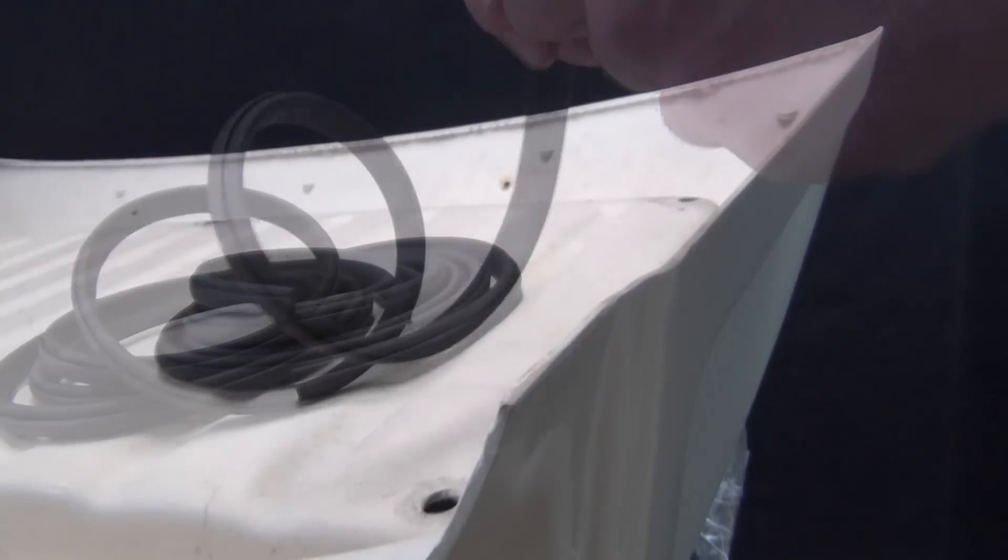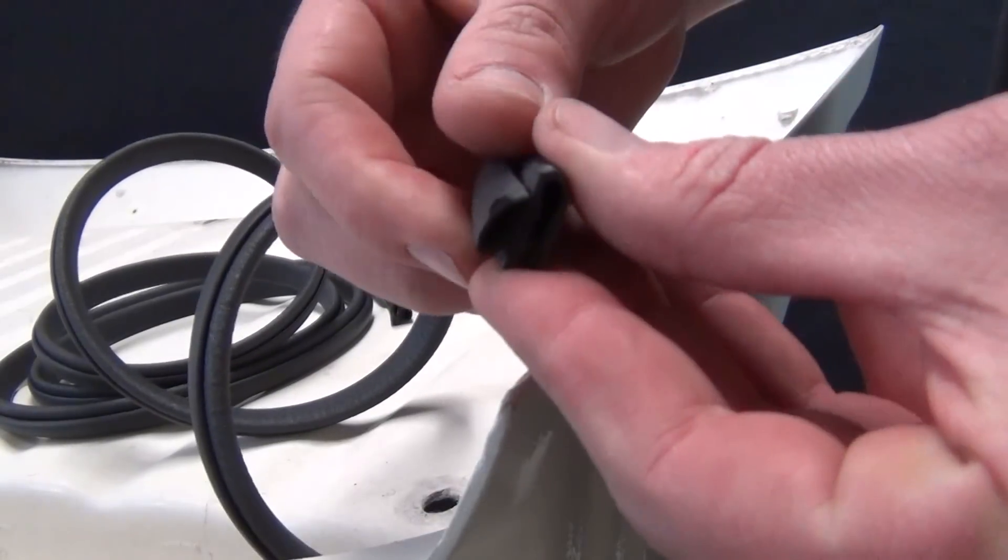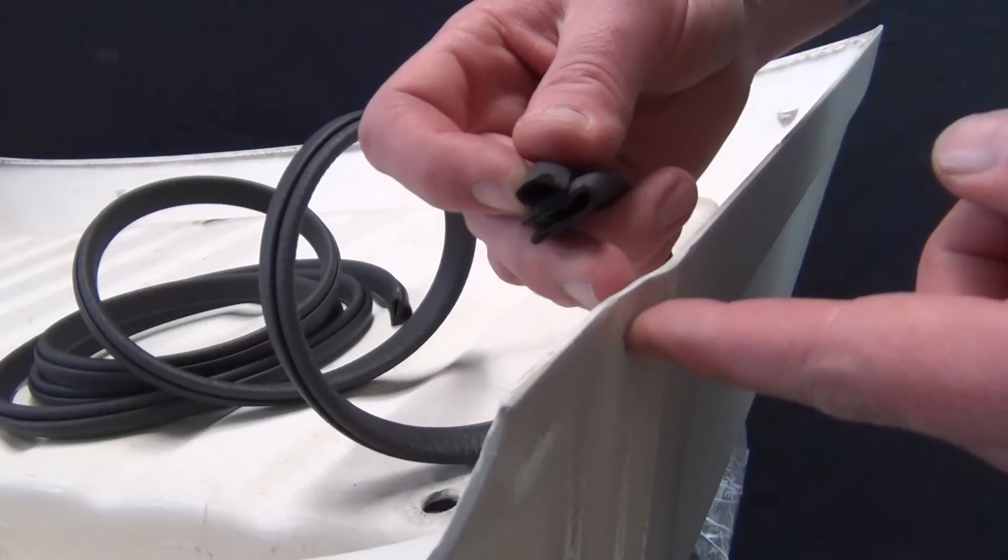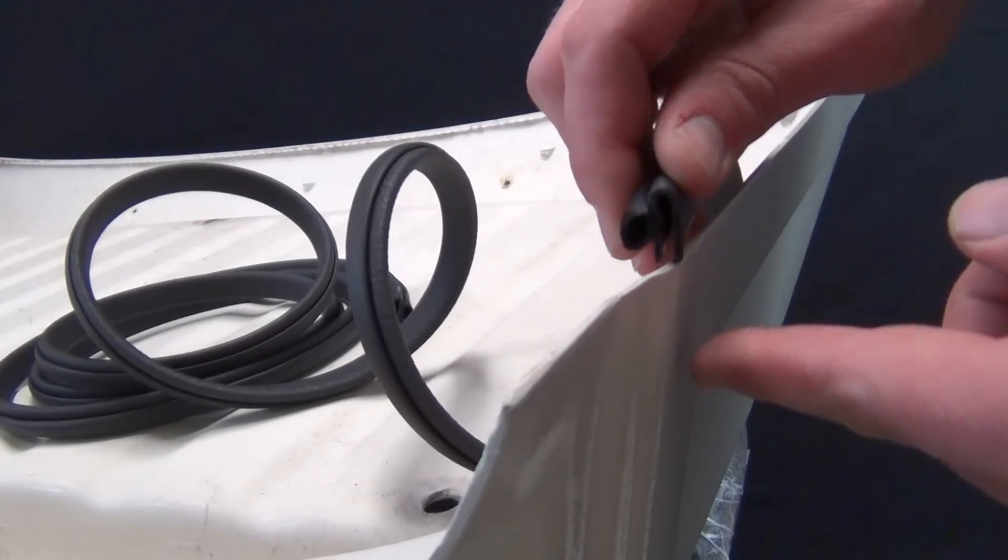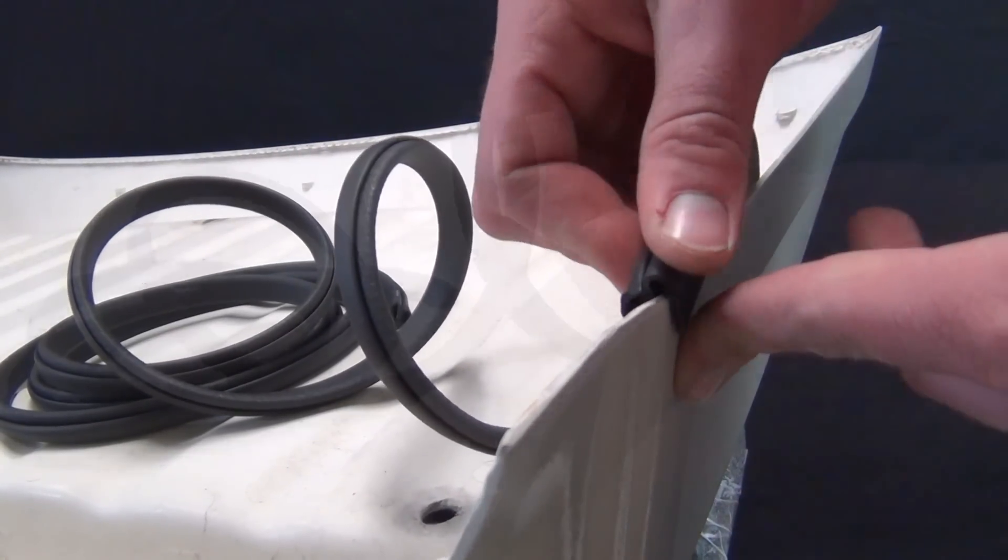The seal is mechanical so no adhesive or messy glue is necessary. Start at the second roll from the rack body and with the bulb facing inward, press the channel over the edge of the rack firmly.